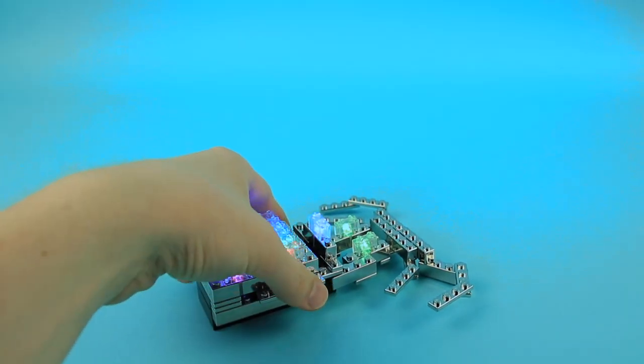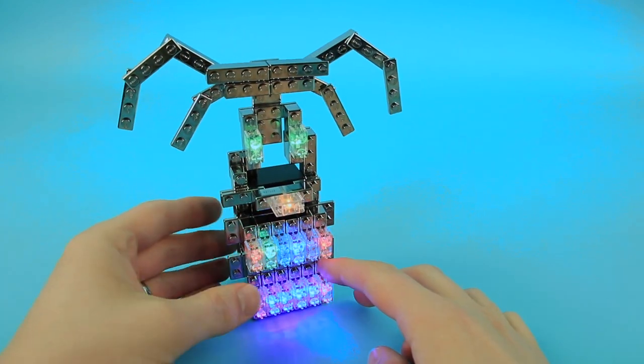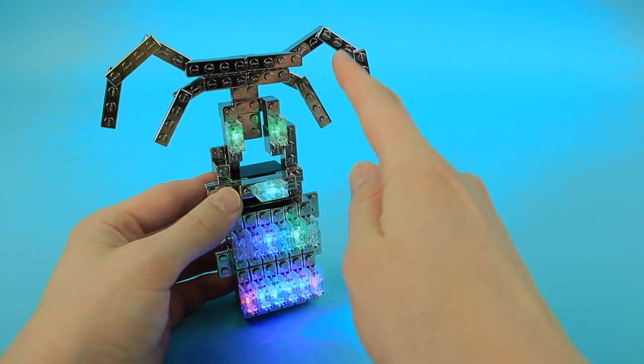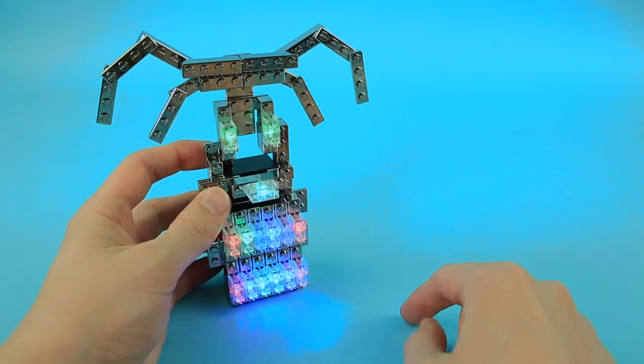At this point, you can stand the model up. Should be able to stand on its own on the battery box. And you can start to see the shape of the girl. The hair up here. The eyes. The mouth. And the dress down there.